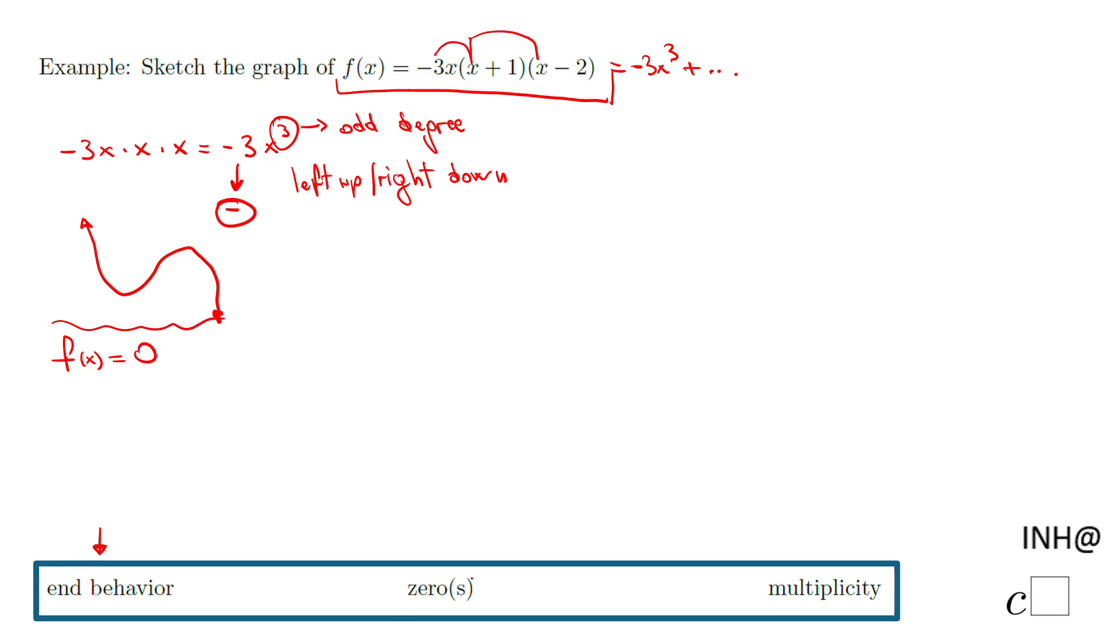Okay, so we look into the zeros now and we have this factor form. That's great: negative 3x times (x plus 1) times (x minus 2), and that equals to zero. And like I said, we have the factor form, so we're going to make the first factor equals to zero, which gives us x equals zero. That would be a first zero.